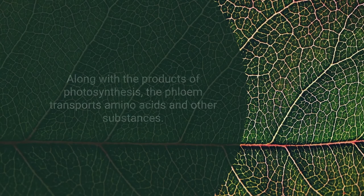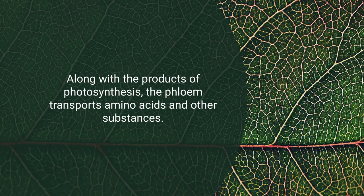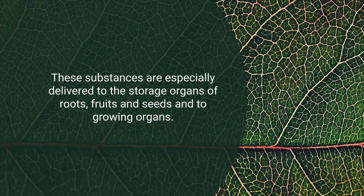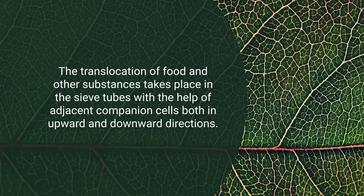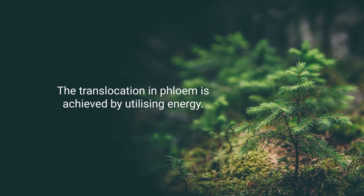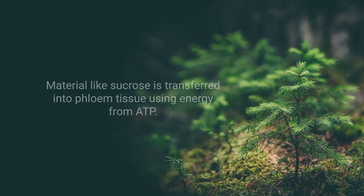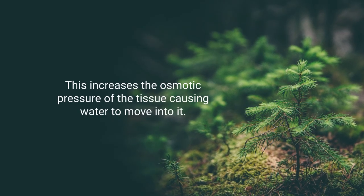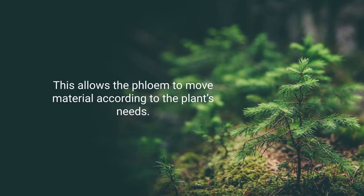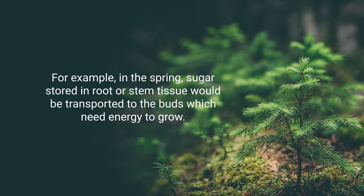The transport of soluble products of photosynthesis is called translocation, and it occurs in the vascular tissue known as phloem. Along with photosynthesis products, phloem also transports amino acids and other substances, which are delivered to storage organs like roots, fruits, seeds, and other growing organs. Translocation in the phloem takes place through sieve tubes with the help of adjacent companion cells, in both upward and downward directions, by utilizing energy — sucrose is transferred using energy from ATP.